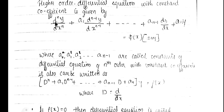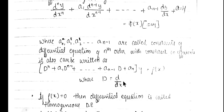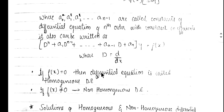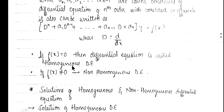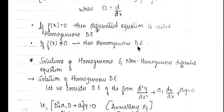Here capital D equals d/dx. We note that if φ(x) equals 0 — that is, when the RHS equals 0 — then the differential equation is called a homogeneous differential equation. If the RHS is not equal to 0, then it is called a non-homogeneous differential equation.